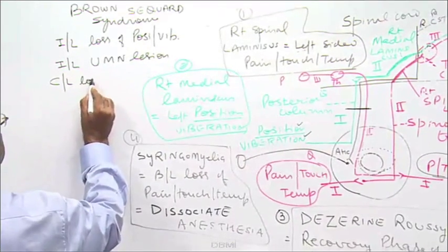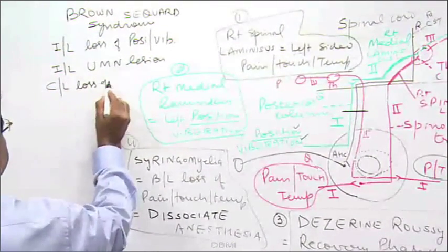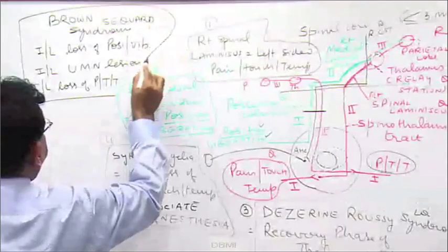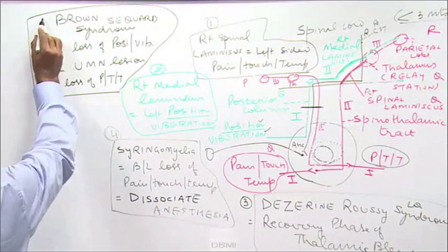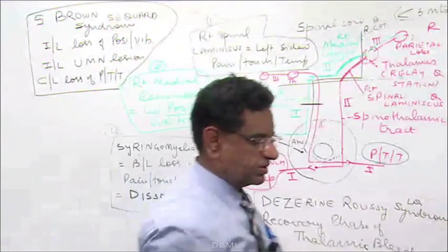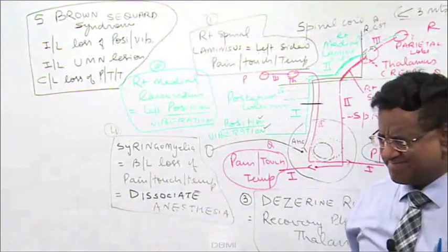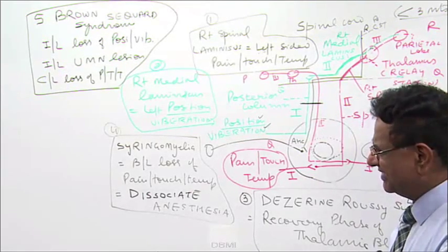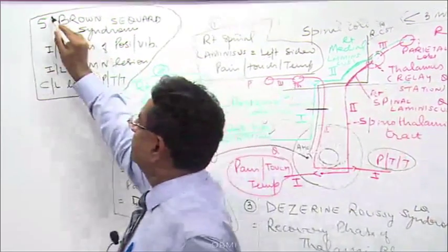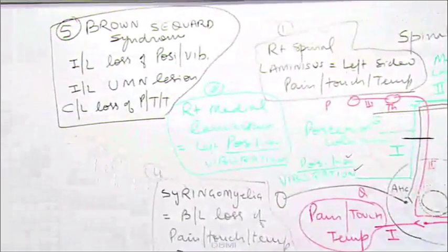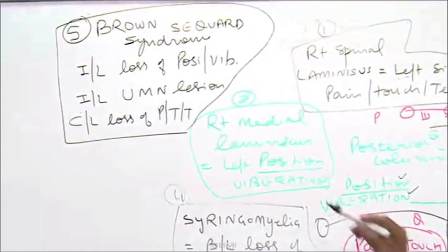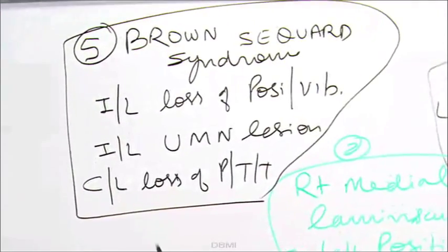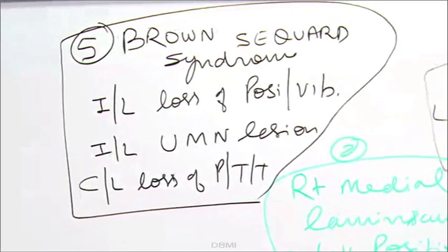Lateral loss of pain, touch and temperature — this is box number 5. Box number 5 covers ipsilateral loss of position and vibration sense, ipsilateral upper motor neuron lesion, and contralateral loss of pain, touch and temperature.